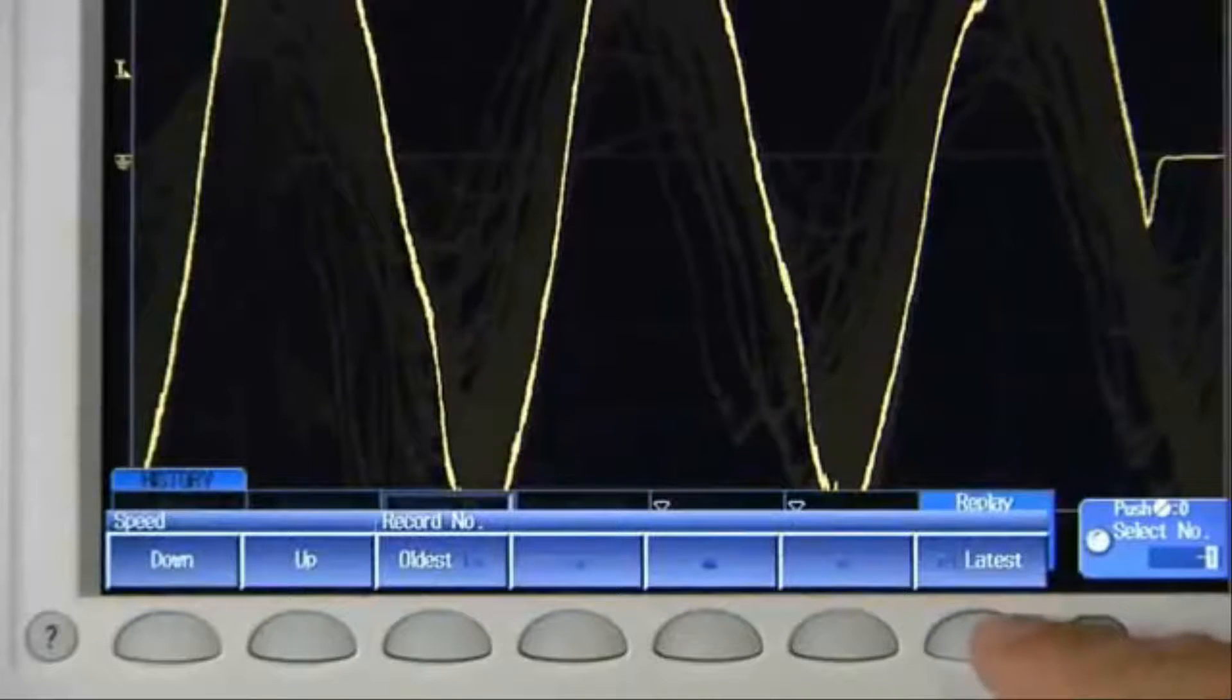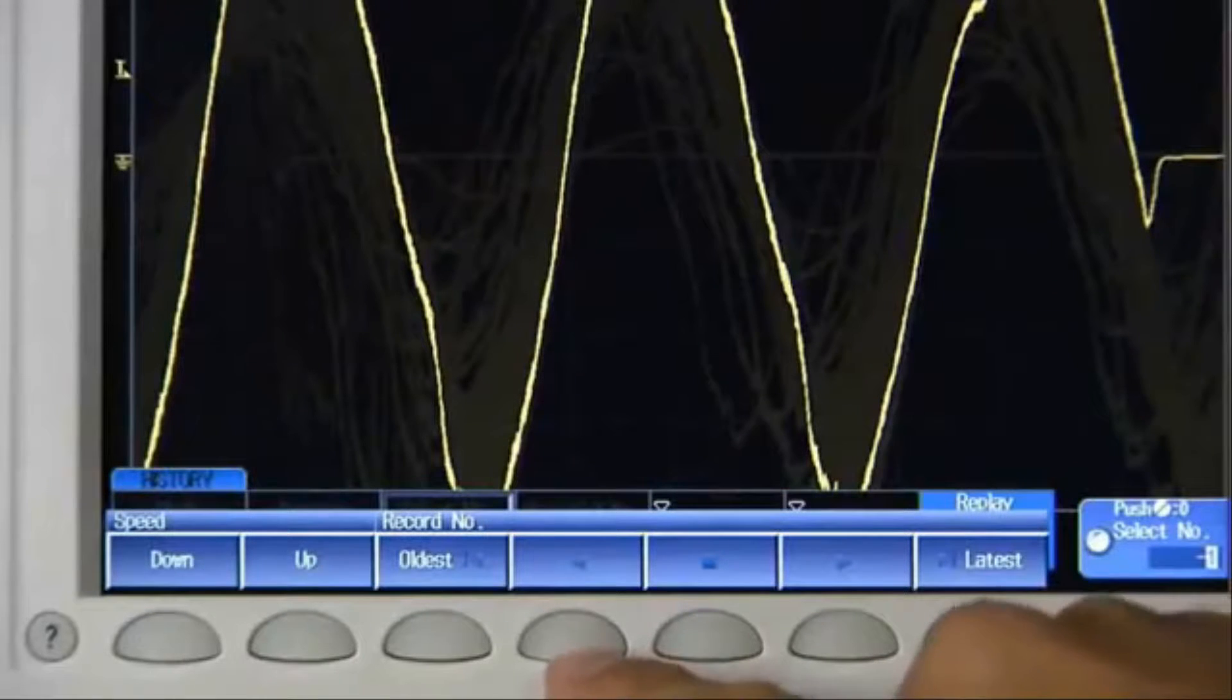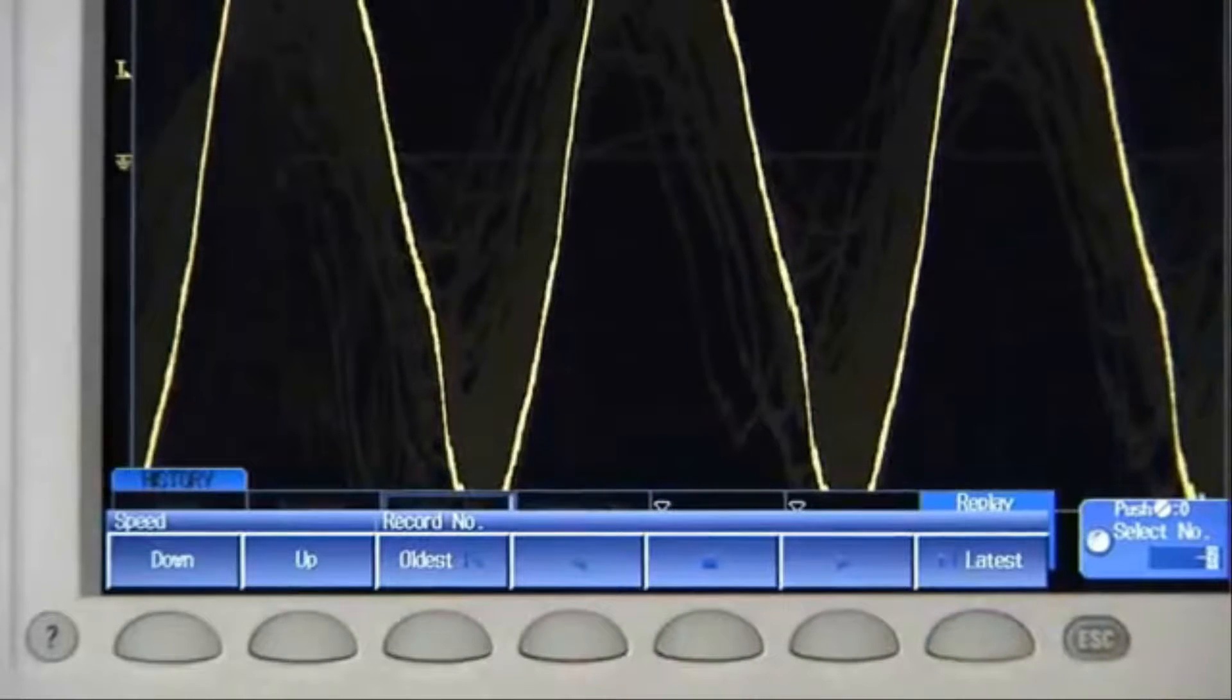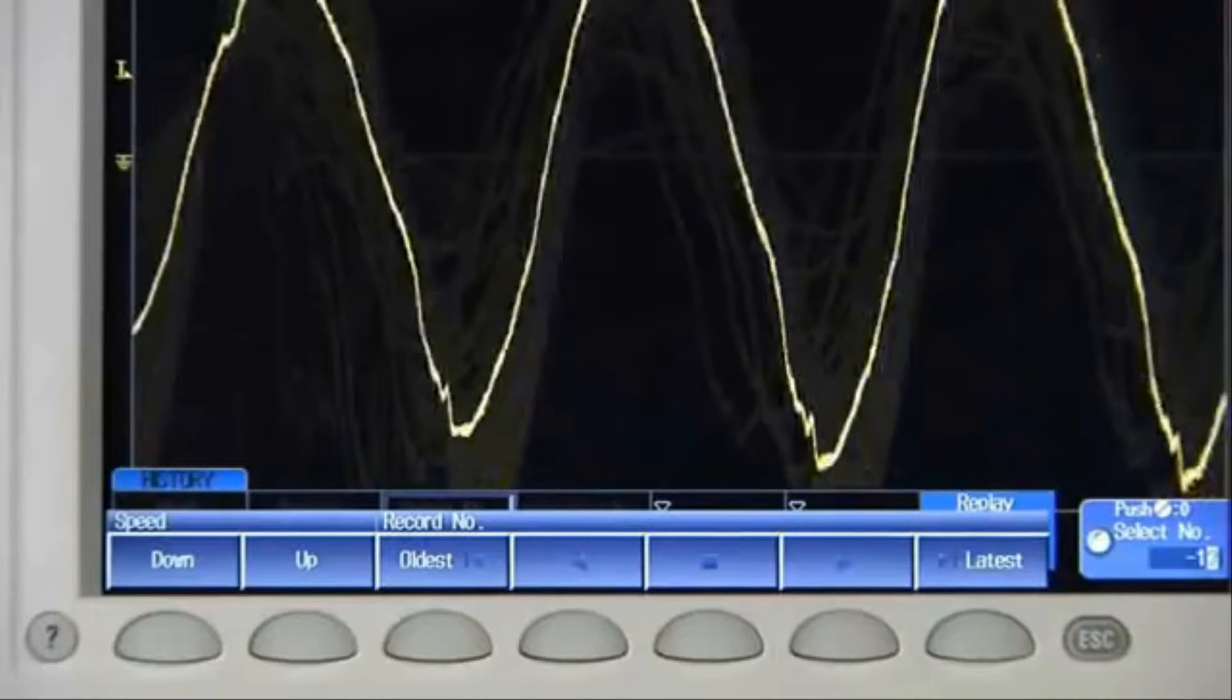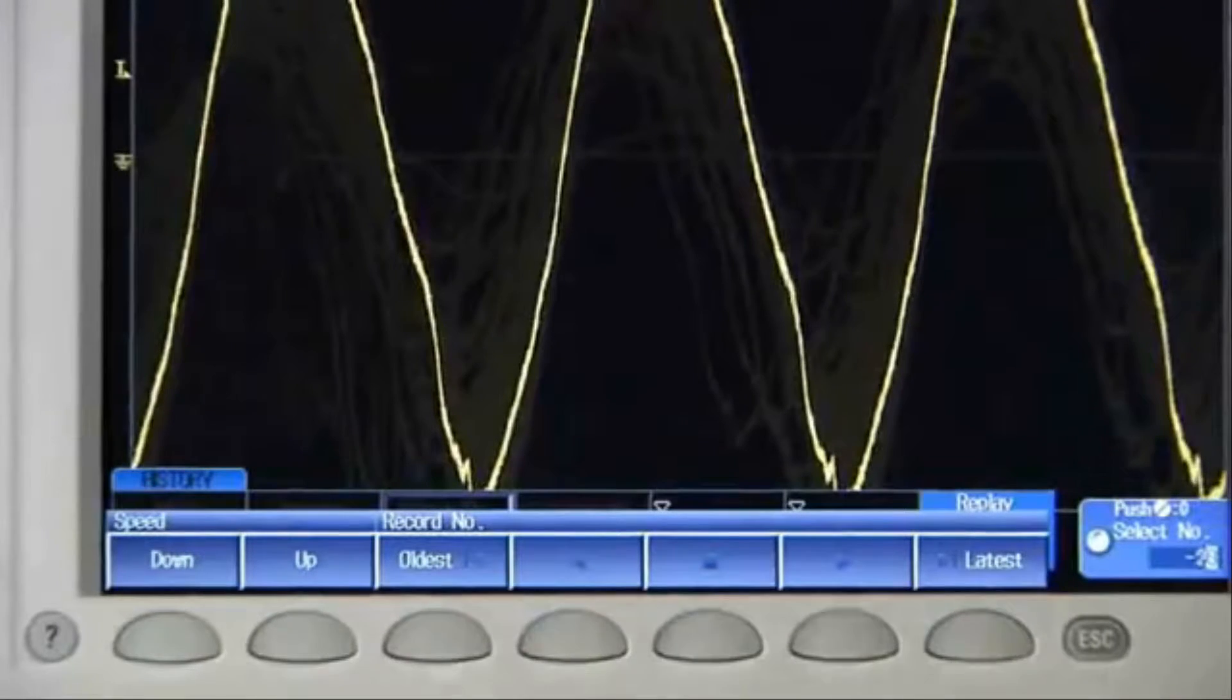Like a DVR, history memory in the DLM2000 allows you to view, playback, and even search for anomalies long gone by.